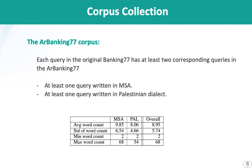The Arabic Banking77 contains multiple queries for every corresponding English query. That's because we have one query in MSA and one query in Palestinian dialect, and sometimes we have more, as we're going to discuss in a bit.